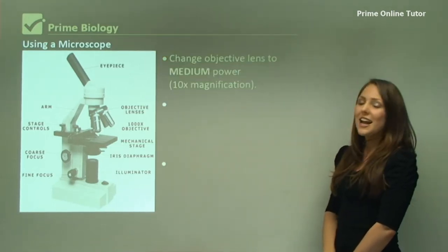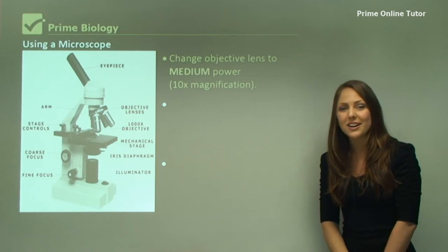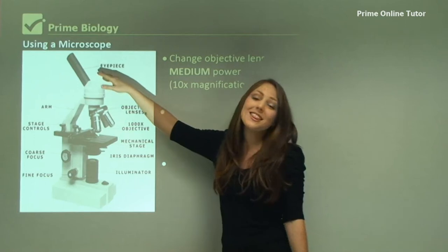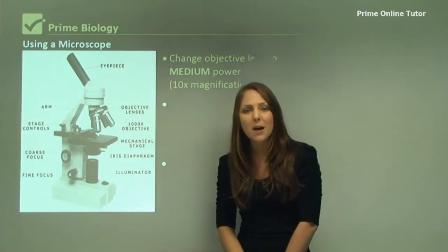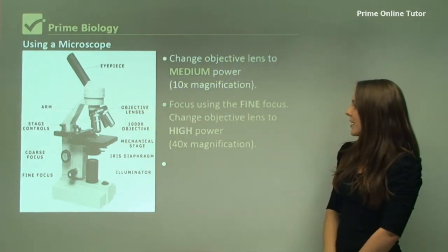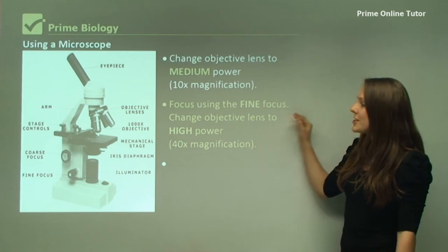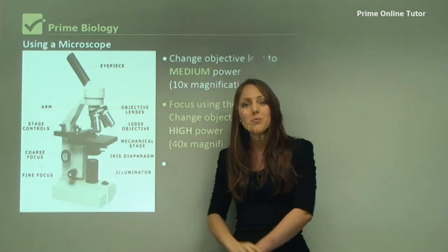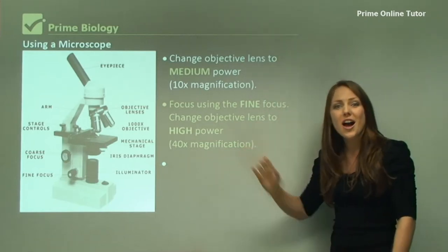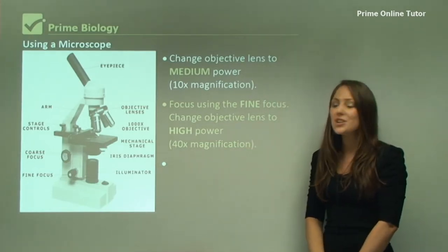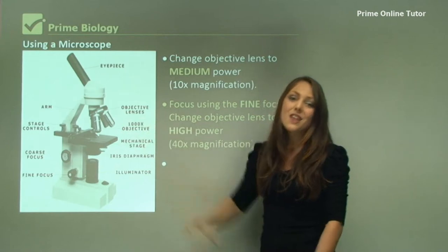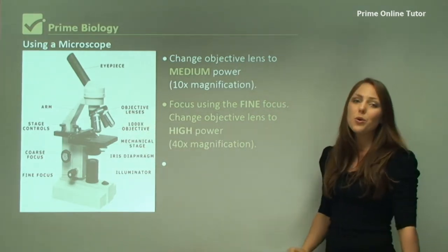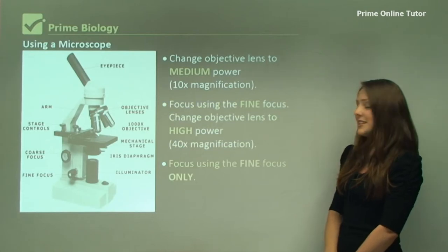You can change the objective to the medium power. The medium power objective is actually 10x magnification. So with the eyepiece, it's 100x magnified. You can then focus using the fine focus. And you can go up to the highest possible power, which is 40x objective lens. The total magnification then is 400x, and you only focus using the fine focus with this one.